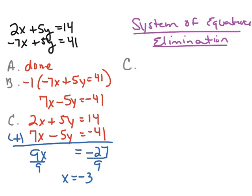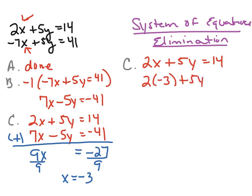However, I still have to find out what the y value is equal to. So I'm going to take this negative 3 and substitute it in for x in one of the original equations. I can use either equation — the choice is mine. I'm going to go ahead and use that first equation: 2x plus 5y equals 14. Now that I know x equals negative 3, I'm going to replace x with negative 3.